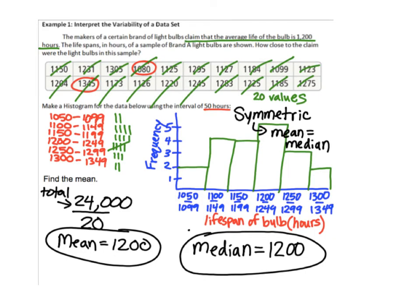This first example is a review of making a histogram like we did back in 11.1. The makers of a certain brand of light bulb claim that the average life of the bulb is 1,200 hours. I made a histogram using intervals of 50, starting at 1050 and going up to 1300. Notice that this histogram is pretty symmetrical — it has that hill-shape curve. The mean of this data distribution is 1,200, and because it's symmetric, the mean and the median are going to be equal to each other.